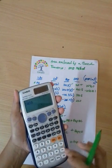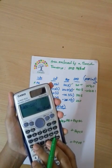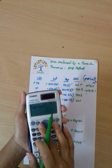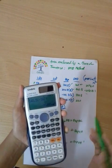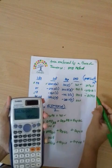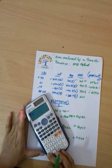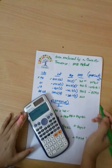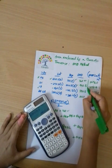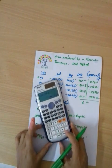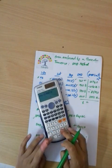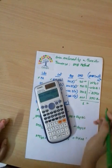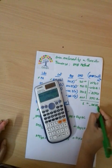We calculate each DMD multiplied by its latitude to get the double areas. DMD 540.5 multiplied by latitude minus 160 equals minus 86,480. DMD 220 multiplied by latitude 179.6 equals minus 39,512. DMD 264 multiplied by latitude gives minus 105,808.1, and the total double area sums to minus 126,316.1 square meters.